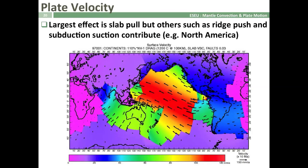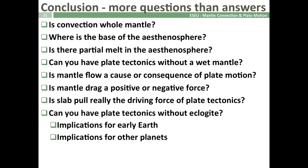So as a consequence, we can surmise that the largest effect on plate velocity is slab pull, but other forces such as ridge push and subduction suction probably contribute — because plates like North America, which have no subduction margins, are still moving. We're left with a few more questions than answers: Is convection within the mantle whole-mantle or layered within upper and lower mantle? Just where is the base of the asthenosphere? Is there partial melt in the asthenosphere? Can you have plate tectonics without a wet mantle? Is mantle flow a cause or a consequence of plate motion? Is mantle drag a positive or negative force? Is slab pull really the driving force of plate tectonics? And can you have plate tectonics without eclogite — which has implications for the early Earth, where temperature was higher and we may not have had eclogite, and implications for other planets with different temperature profiles.